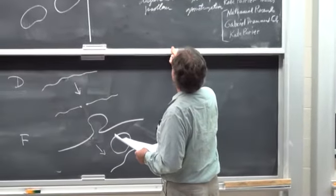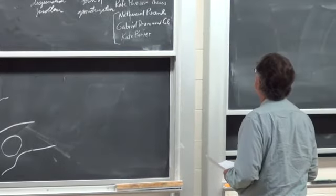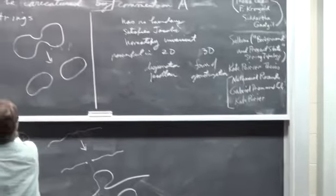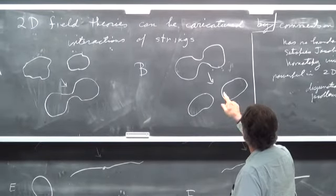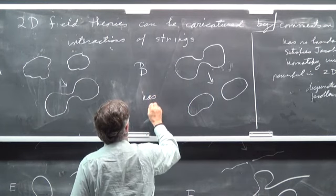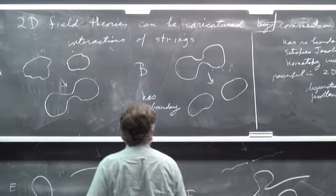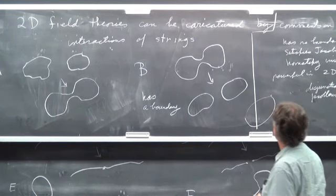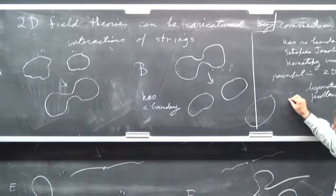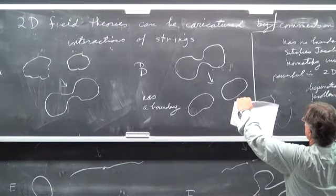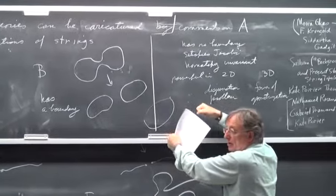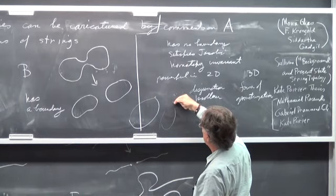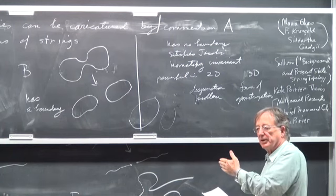That's comments about A. Now let me discuss B. B has a boundary. You can imagine a very tiny interaction where the string intersects itself, a tiny circle comes off, and then you move it — the thing intersects with itself, interacting and interacting, and then one piece gets smaller and smaller, pulled out until it disappears. So there's a kind of boundary in the middle of the process.